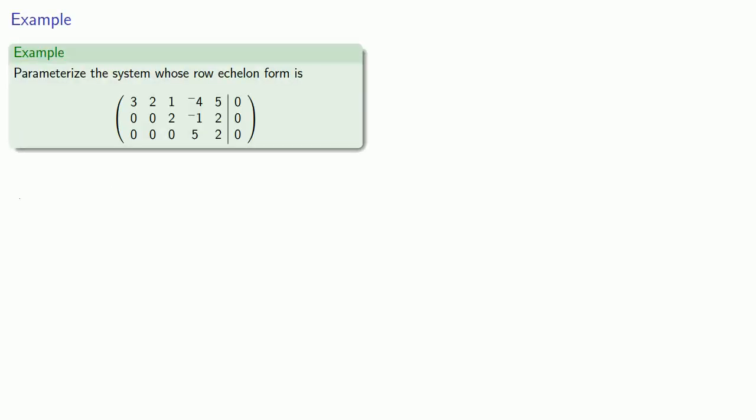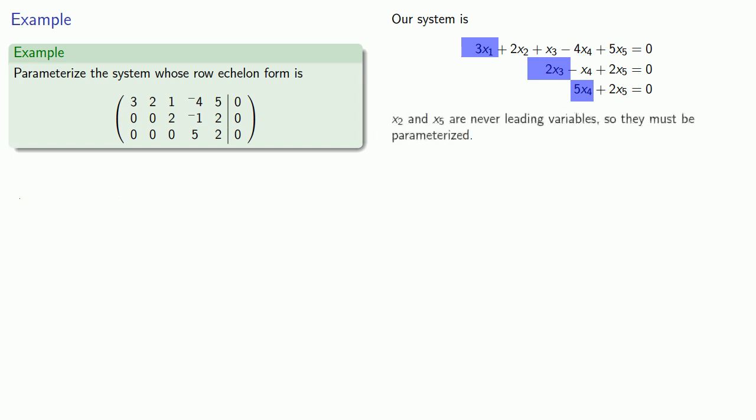For example, suppose I want to parameterize the system whose row echelon form is given. We'll go ahead and write this as a system of equations using our variables x1, x2, x3, x4, and x5. We see that x1, x3, and x4 are leading variables, while x2 and x5 are never leading variables. So x2 and x5 will have to be parameterized.